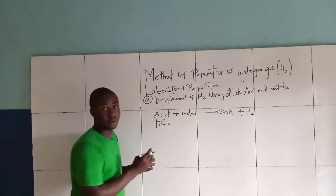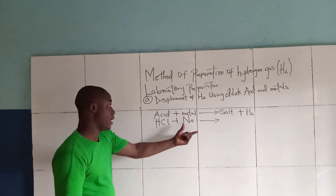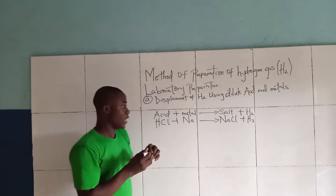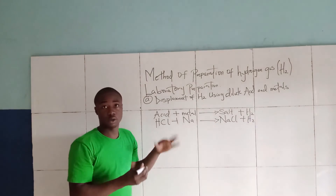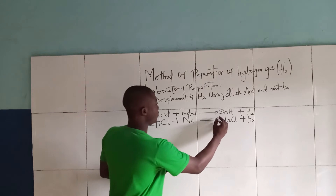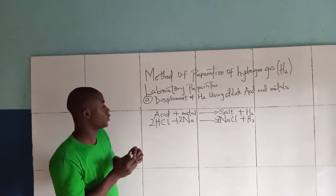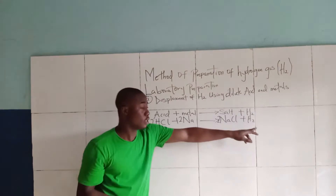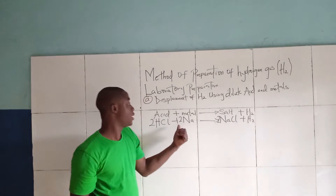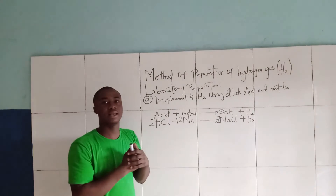For example, this is HCl reacting with a metal like sodium. What are we going to get? The salt formed will be sodium chloride and it's going to liberate hydrogen gas. But you can see the reaction is not balanced, so we are going to balance the reaction by putting two here and also two here. The reaction is balanced: hydrogen is two on each side, chlorine is two on each side, and sodium is two on each side.